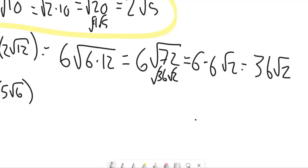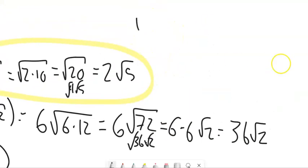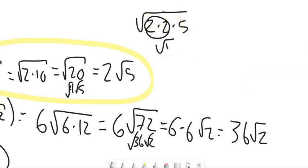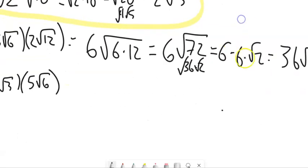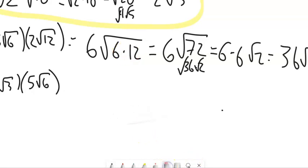I want to think about another way to do this as well, because this brute-force method is fine. For example, with root 2 times root 10: you could break up 10 as 2 times 5, giving you root 2 times root 2 times root 5. The root 2 times root 2 is 4, so square root of 4 times root 5 is 2 root 5. If you can see the perfect squares before you combine them, don't combine just to tear them apart — you can pull them out directly and be clever about the work.